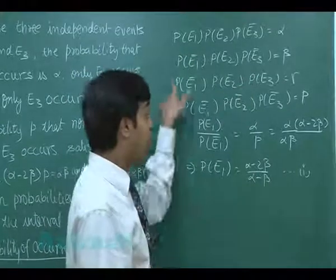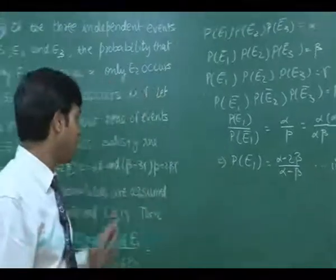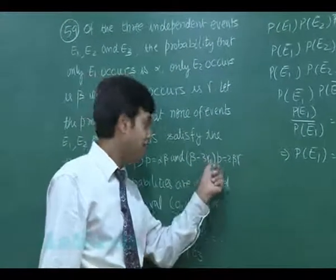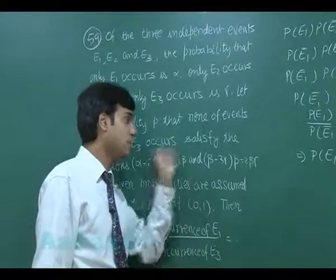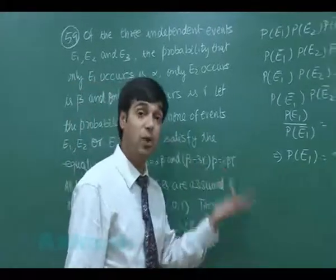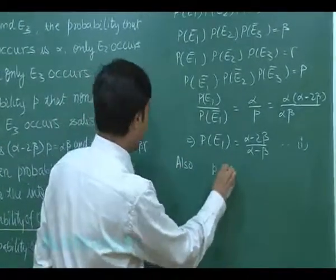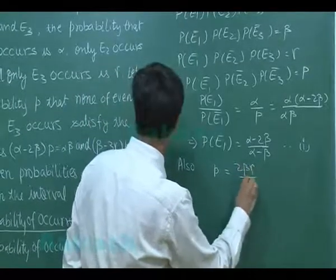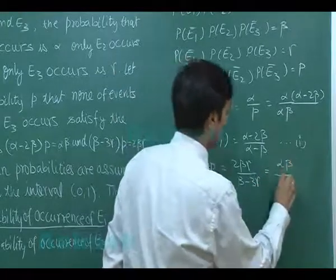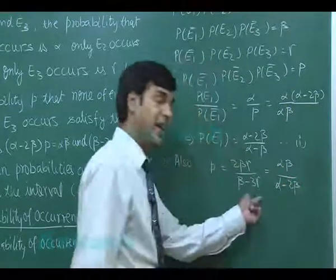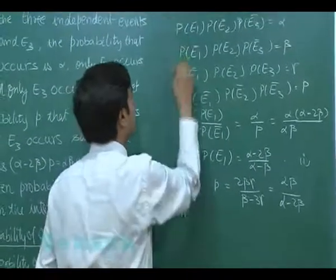Now we need P(E3). We go with gamma and p. We need gamma in terms of alpha and beta. Using the second given equation, substituting p = alpha*beta / (alpha minus 2*beta) to get: 2*beta*gamma / (beta minus 3*gamma) = alpha*beta / (alpha minus 2*beta). From here we get the value of gamma.